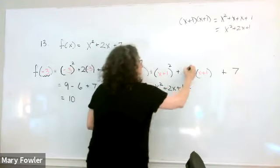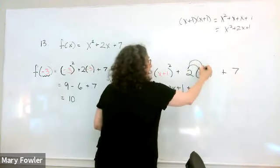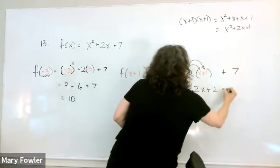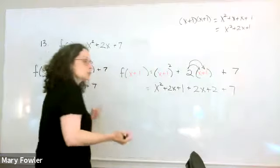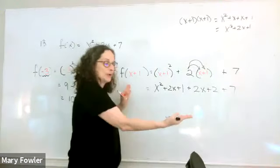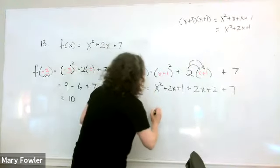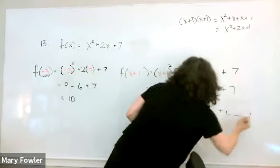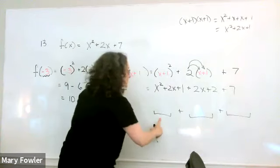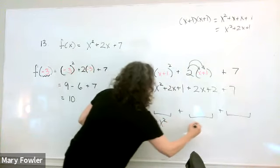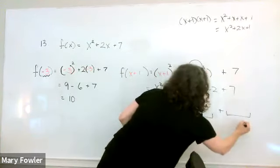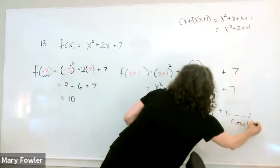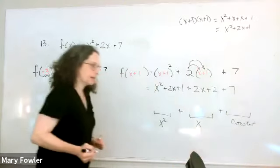And we want to distribute now the 2. We get 2x plus 2 and then 7. So we're going to combine like terms. We're going to have our little buckets. And in this case, there are three terms that we're interested in, three buckets: the x squared bucket, the x bucket, and the constant bucket.